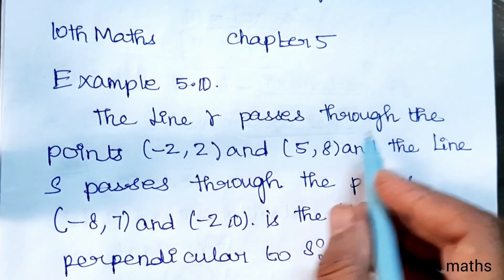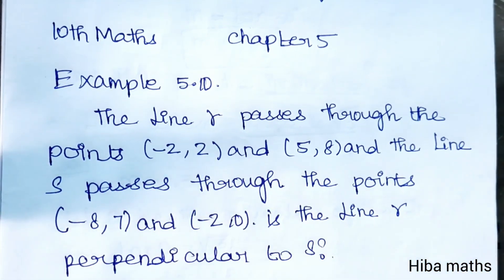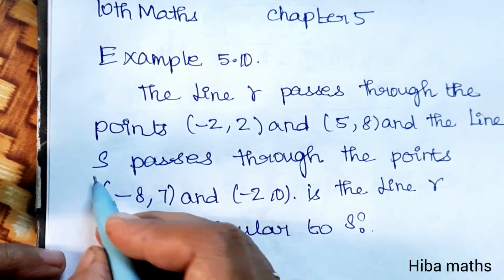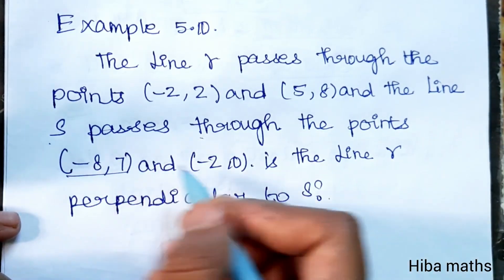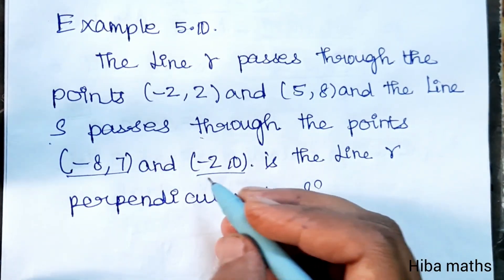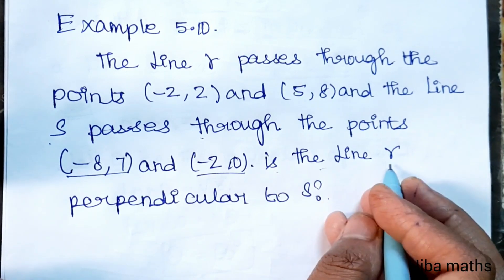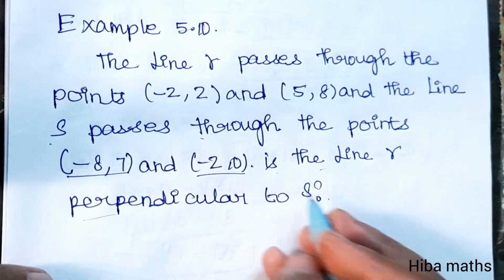The line R passes through the points (-2, 2) and (5, 8), and the line S passes through the points (-8, 7) and (-2, 0). Is the line R perpendicular to S?